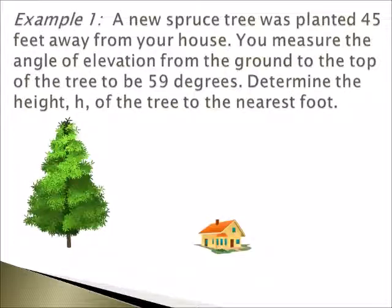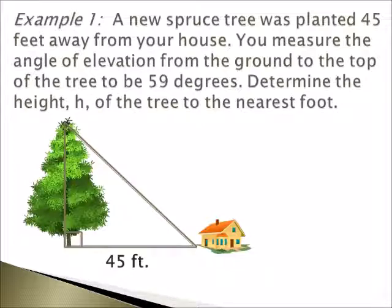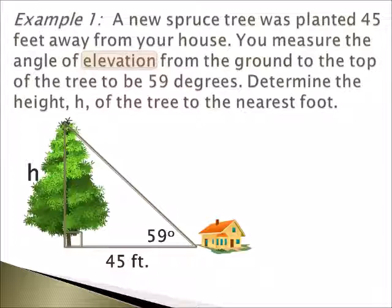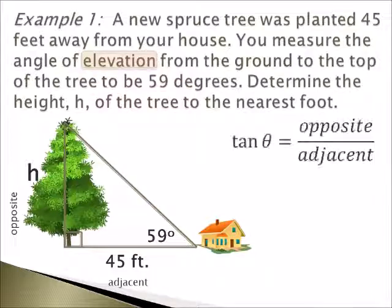So let's begin with the spruce tree. Here is your spruce tree and here is your house. Now if we create the right triangle, we can implement the information from the example into our picture. We know the house is 45 feet away from the tree, and then we have to notice the keyword elevation. Elevation is from the ground to the top, so the angle in the bottom right-hand corner will be labeled 59 degrees. We're determining the height of the tree, so the left-hand side of your triangle where your tree is will be the height. Looking at the angle, across from it is your tree, so that is known as your opposite side, and next to your angle is your adjacent side.